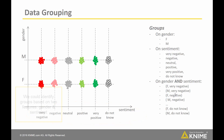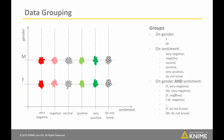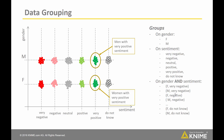Also, we could identify groups based on the two features gender and sentiment — for example, all women or all men with a positive sentiment about the topic or a product.